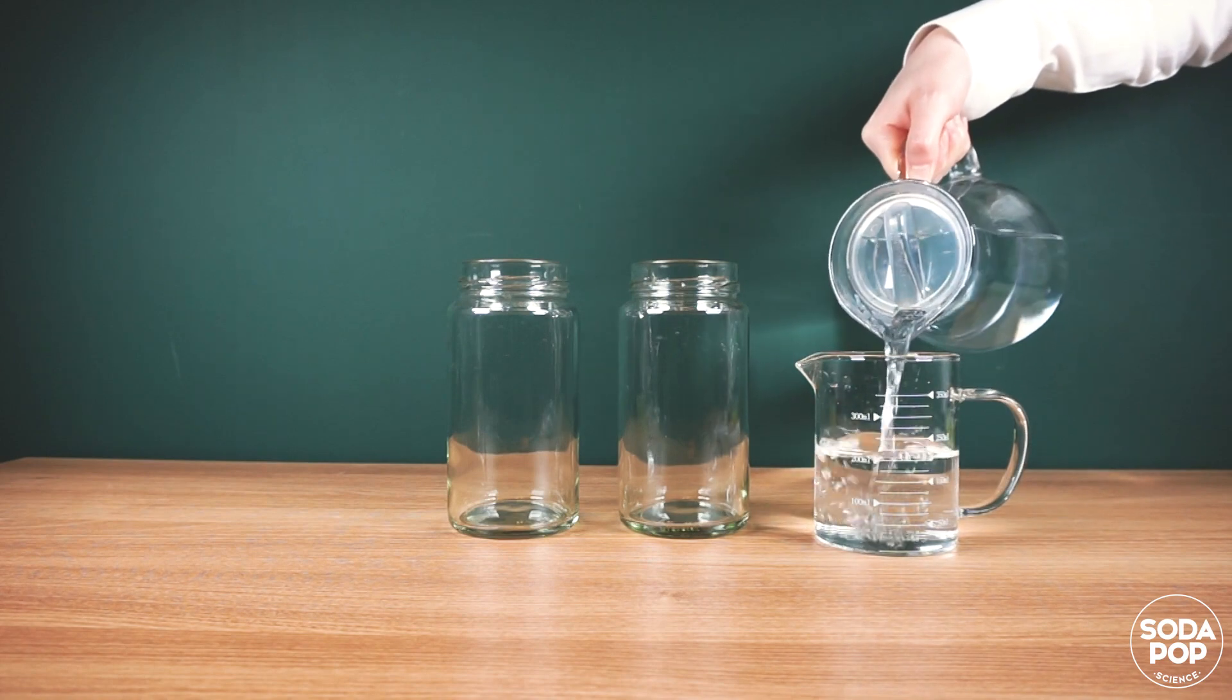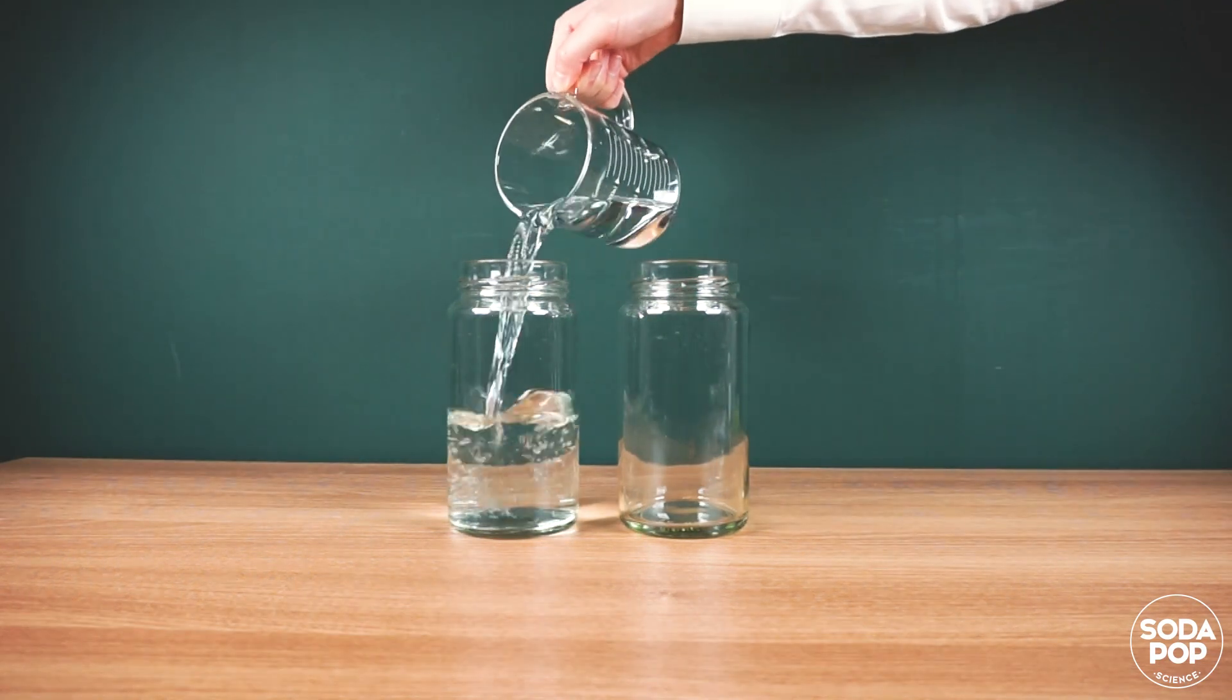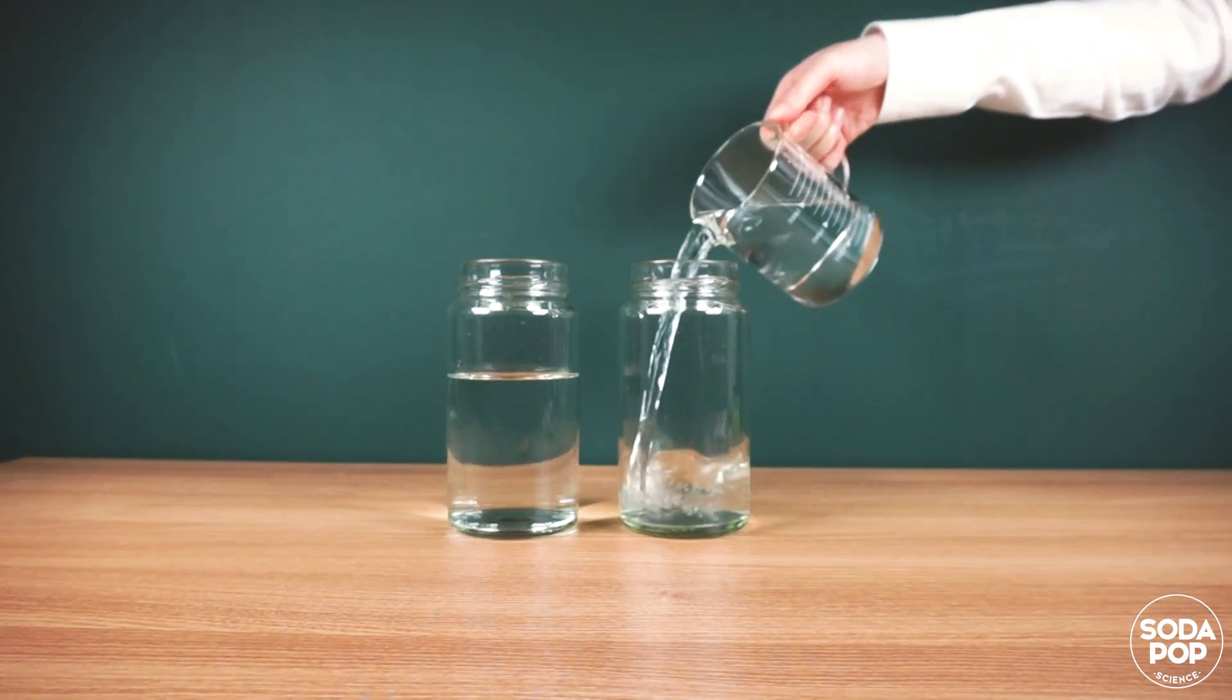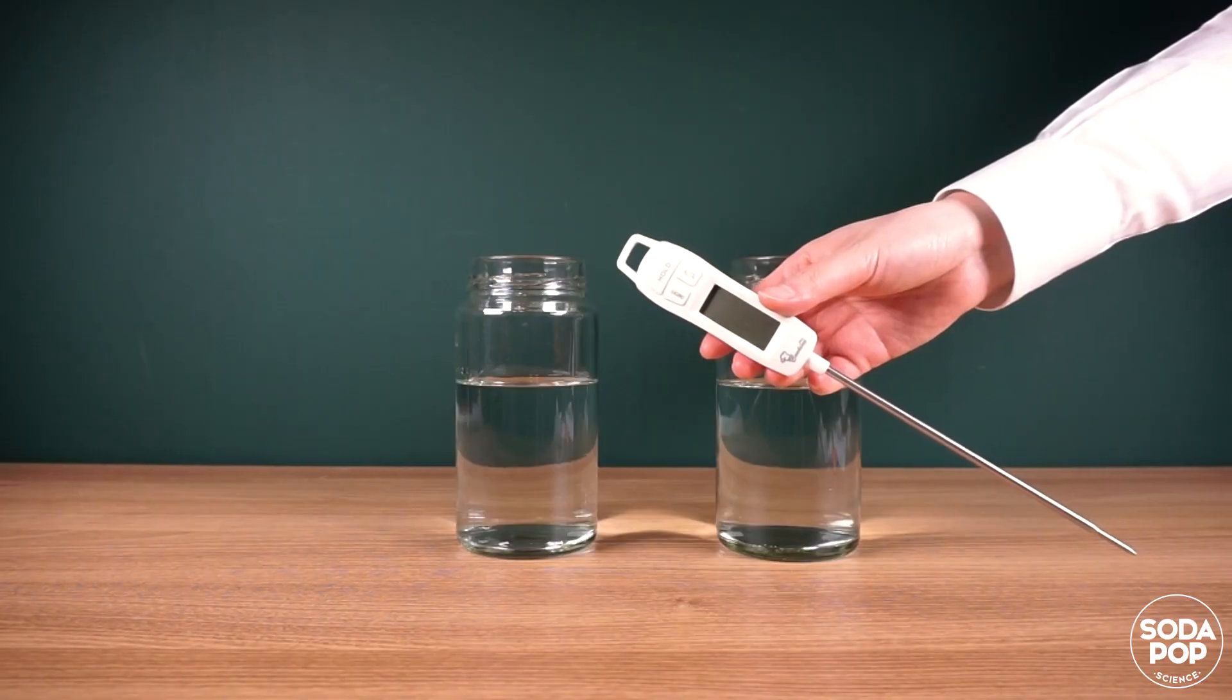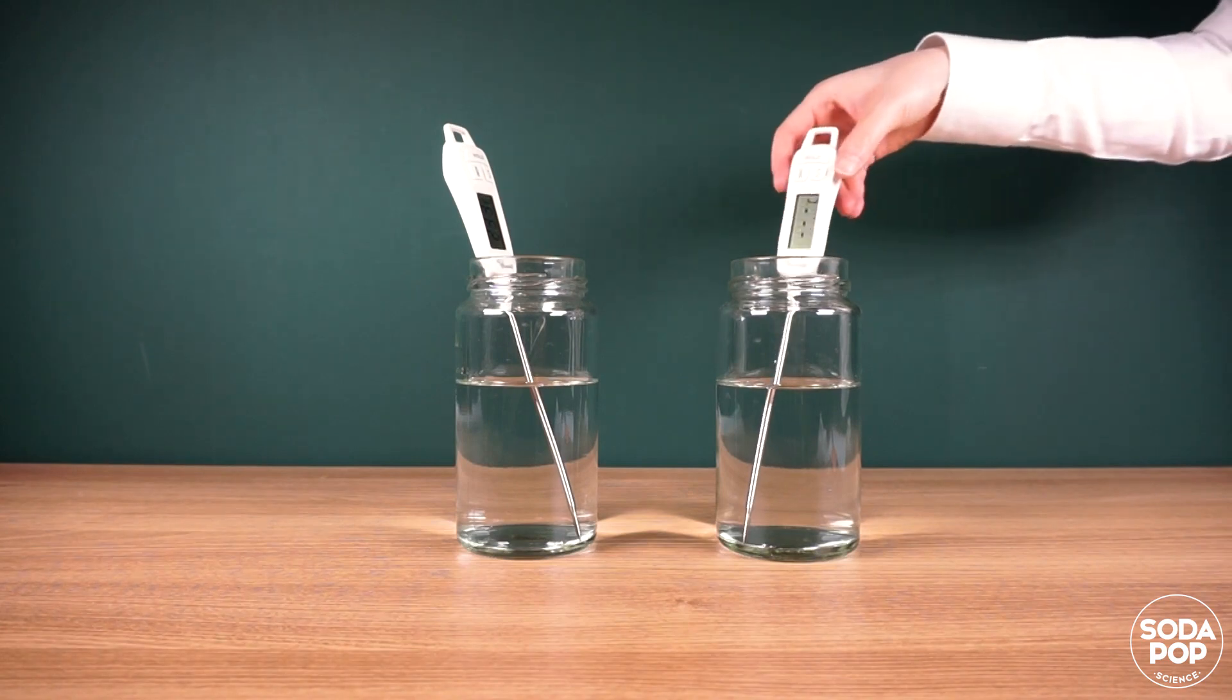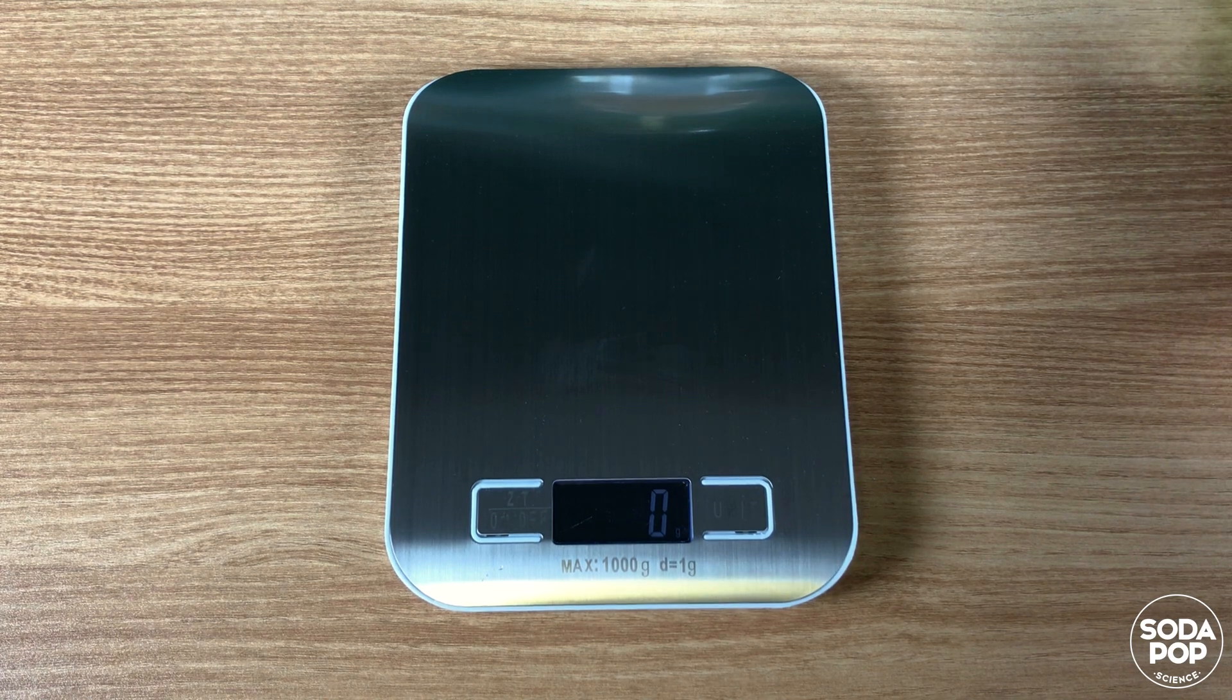Using a measuring cup, pour the same amount of water into each jar. Place a thermometer into each jar. The water temperature is 23.3 degrees Celsius.